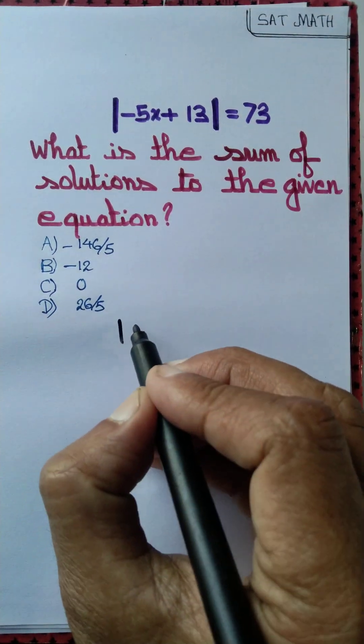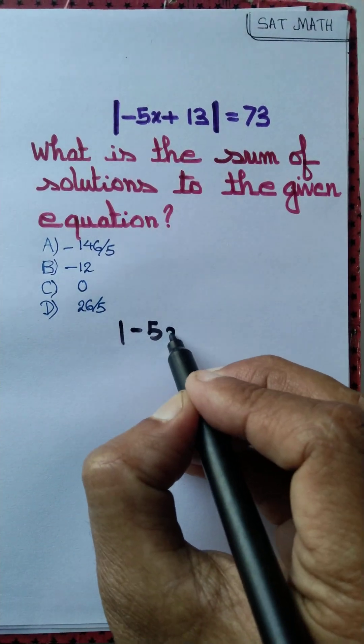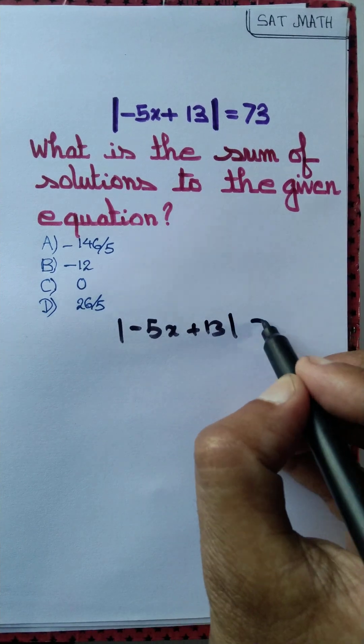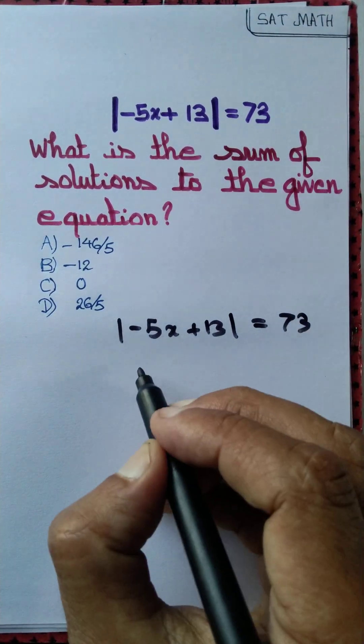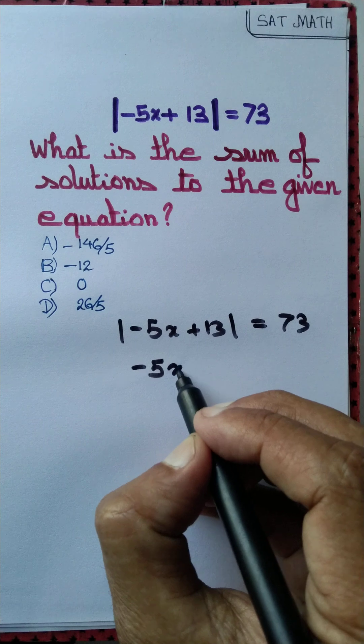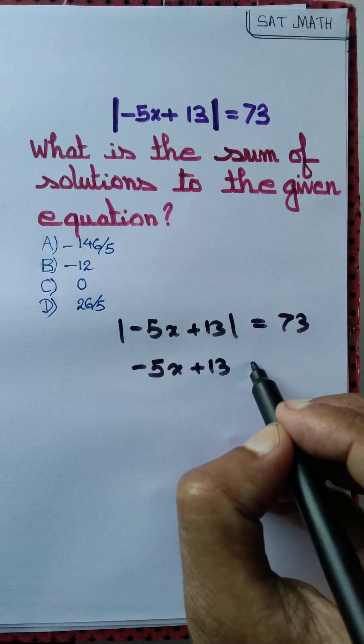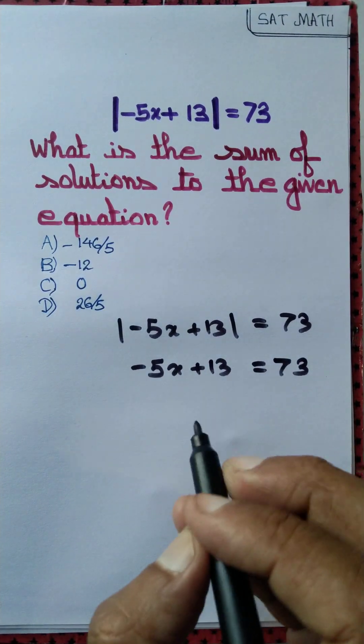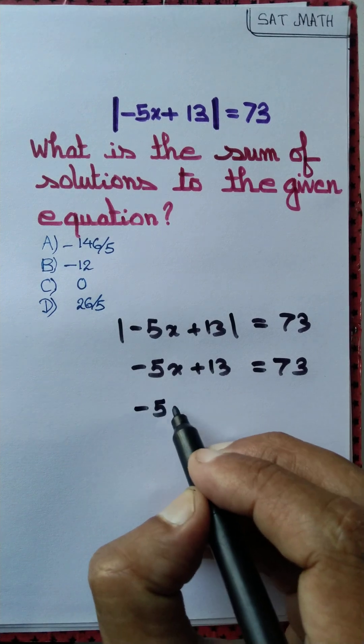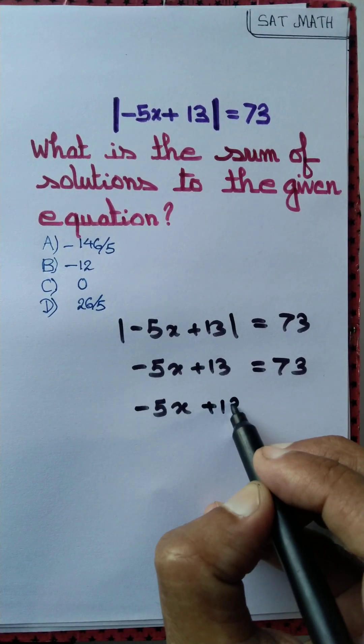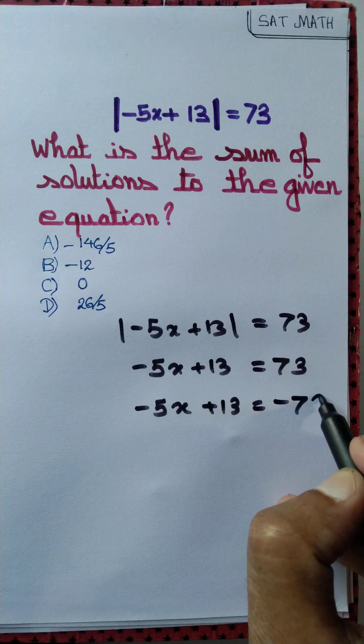You see that modulus of minus 5x plus 13 equal to 73 if minus 5x plus 13 turns out to be 73, or if minus 5x plus 13 turns out to be minus 73.